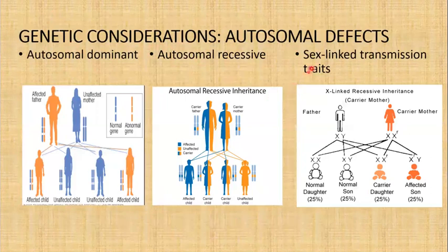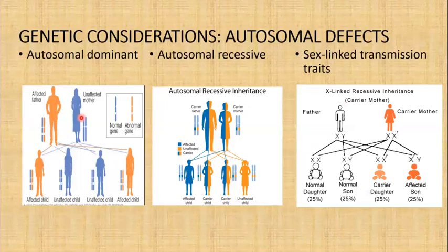An autosomal dominant condition is a union of normal parents with an affected parent's gene. The affected parent has a 50% chance of passing on the abnormal gene in each pregnancy. You see this kind of disease condition in BRCA1, BRCA2 breast cancers, type 2 diabetes, Marfan syndrome, and polycystic kidney disease.